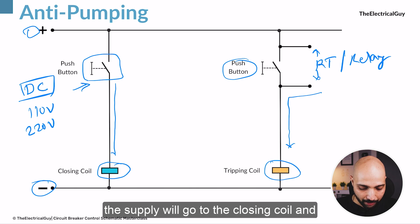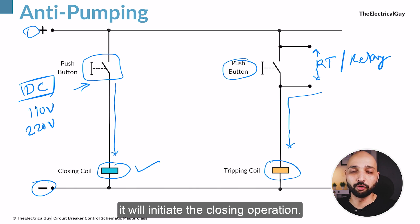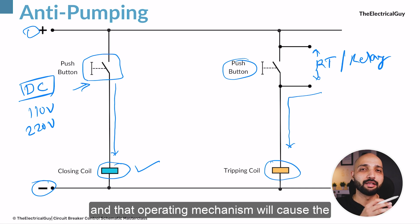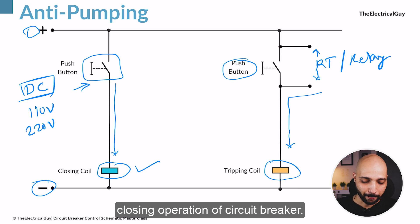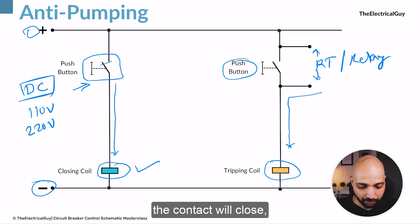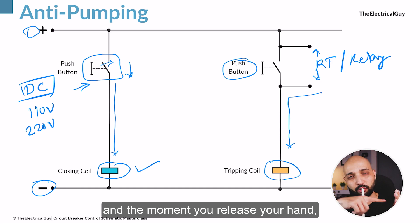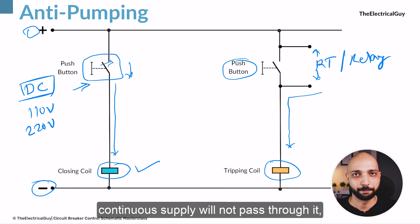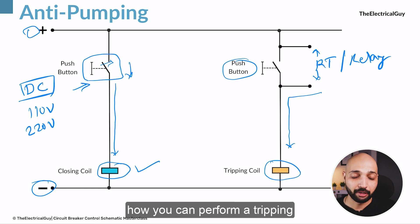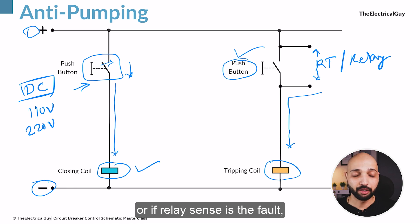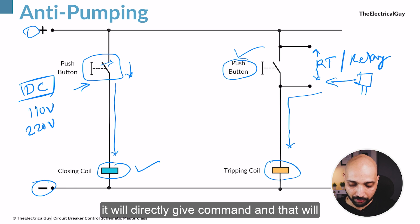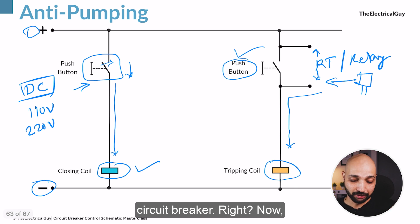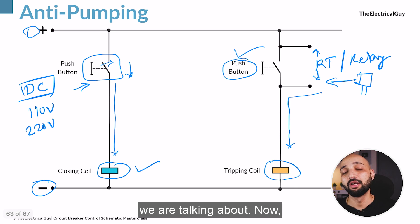When you press the push button, supply goes to the closing coil, which initiates the closing operation — the piston moves, triggering the operating mechanism and causing the circuit breaker to close. When you press the push button the contact closes, supply passes through it, and when you release your hand the contact returns to its original position, breaking the supply so continuous supply will not pass. Similarly, a tripping operation can be performed by pressing the trip push button, or if the relay senses a fault it directly gives the command to the tripping coil.